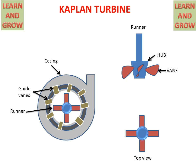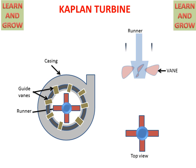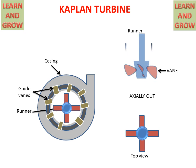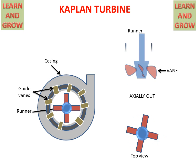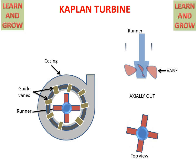Now we see the working of the Kaplan Turbine. When water comes in the axial direction, the runner will start rotating, and the water will also exit in the axial direction. So this is an axial flow turbine, and in the top view we can see the runner rotating.